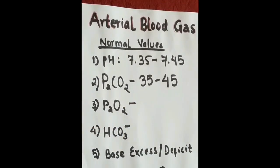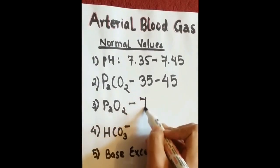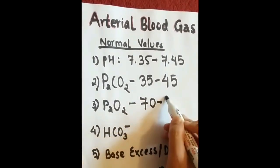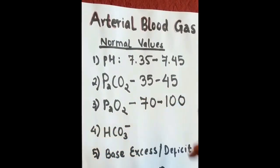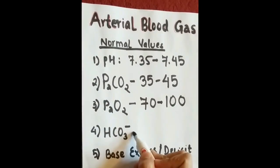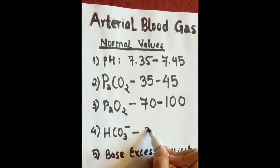Partial pressure of oxygen in arterial blood ranges from 70 mmHg to 100 mmHg. The normal range of bicarbonate is 22 to 26 mEq per liter.